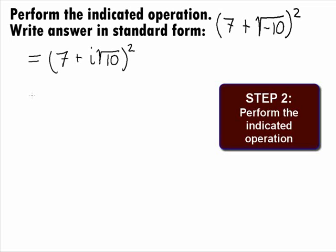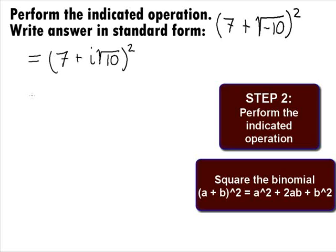In Step 2, we want to perform the indicated operation. When we square a binomial, we get the first term squared plus twice the product of the two terms plus the last term squared.